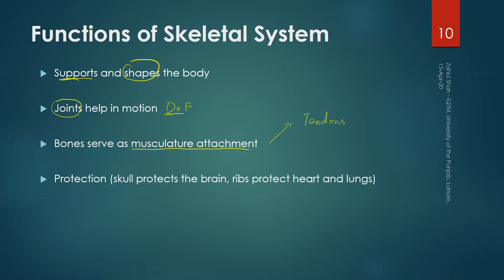Another function of the skeletal system is protection. For example, the skull protects the brain, and ribs protect the heart and lungs. The skeletal system protects vital organs like the brain, heart, lungs, and other inner organs.